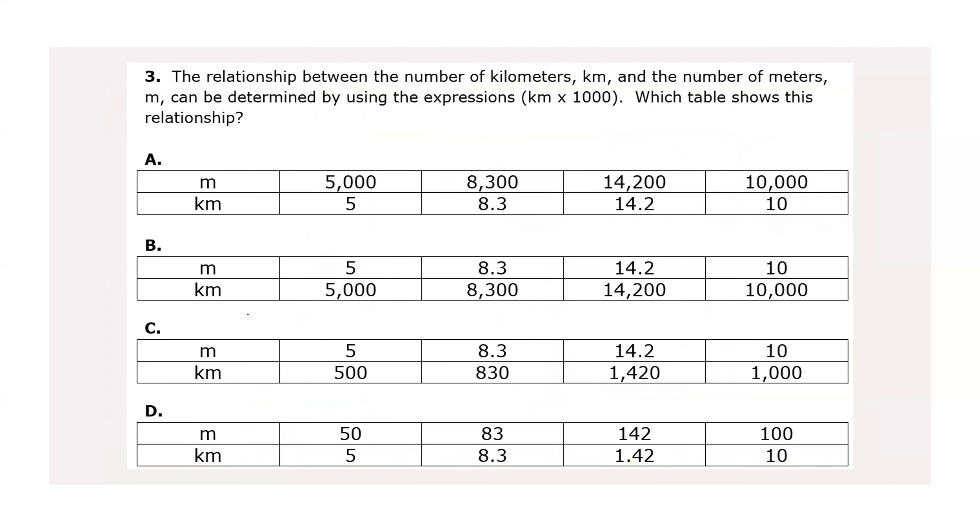Okay. And the last question, we have the relationship between kilometers and the number of meters can be determined by using the expression km times a thousand, which table shows this relationship. So again, this is a King Henry one. So I write my letters down. King Henry died by drinking chocolate milk. We have kilometers. So that's the K king. And we're going to just plain old meters. That's not the end one. This is a base. So I'm going that way.